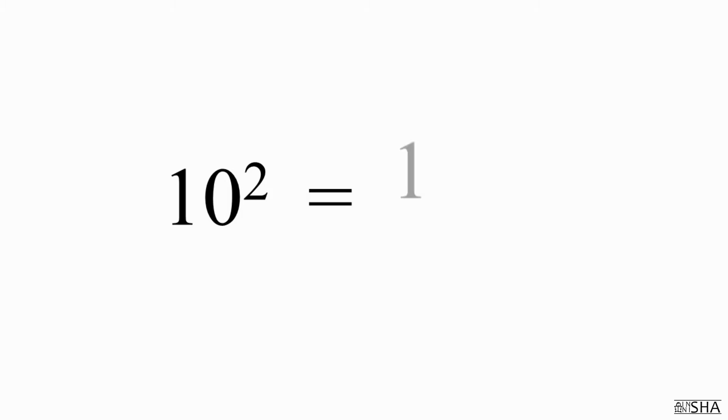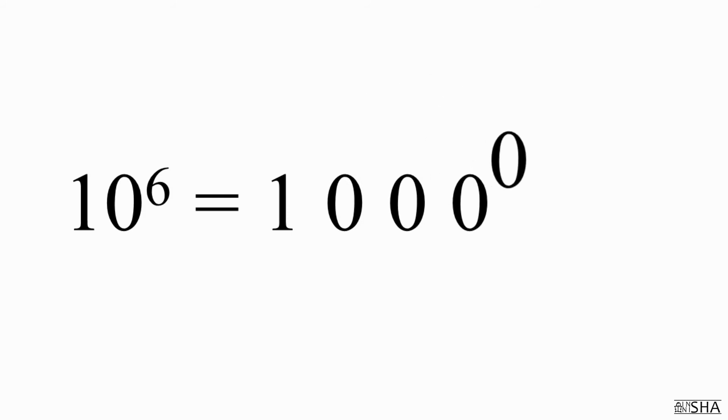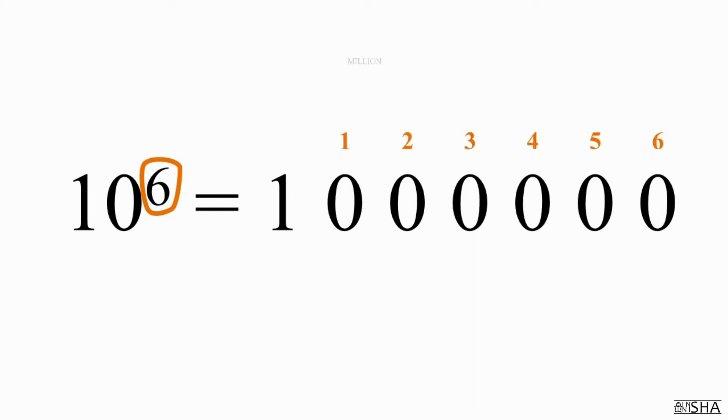For example, ten to the second power is one and two zeros, that is, one hundred. Ten to the sixth power is one and six zeros, which is a whole million.